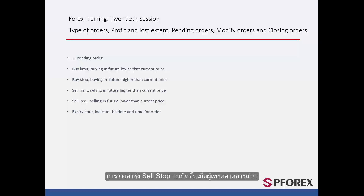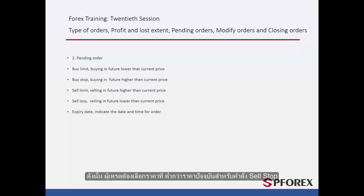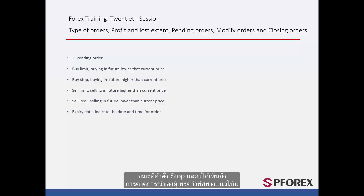Sell stop orders are placed whenever further price reduction is anticipated by a trader, after the market price meets a certain lower price rather than the current price. Hence, a trader must select a lower price than the current price for a sell stop order. In conclusion, limit orders must be placed on markets that may have a direction change at a specified price, while stop orders indicate that the trader predicts there will be no direction change of the market trend even after the price reaches a significant level.